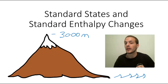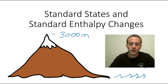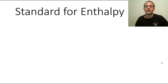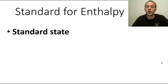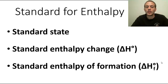When we talk about standard states and standard enthalpy changes, we're talking about defining a zero to which we can compare enthalpy changes for chemical reactions. That standard for enthalpy — that zero value — is composed of three parts, and it's much more complex than defining altitude as sea level. The three parts are: first, the standard state; second, the standard enthalpy change, symbolized as delta H with a degree sign; and third, the standard enthalpy of formation, which is delta H with a degree sign and a subscript F, standing for formation.